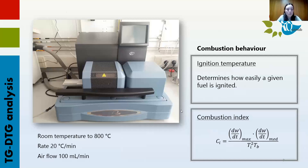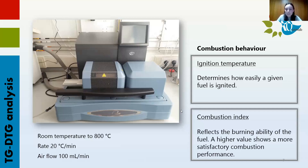As we are looking for a biofuel, it's really important to know the behavior that these samples show during combustion. For that, thermogravimetric analysis is essential. Ignition temperature and combustion index were calculated with information provided by this equipment. Ignition temperature determines how easily a given fuel is ignited, so a lower value is interesting. Combustion index depends on the ignition temperature, the burnout temperature, and the maximum and average mass loss rates, and it reflects the burning ability of the fuel — a higher value reflects more satisfactory combustion performance.